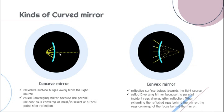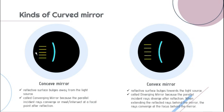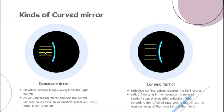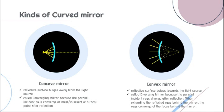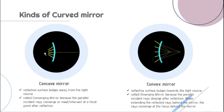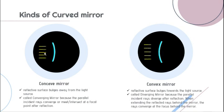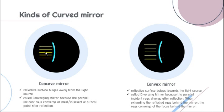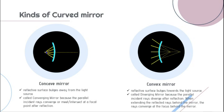In the concave mirror, the reflective surface bulges away from the light source. As the light strikes the concave mirror, the rays seem to intersect at a common point — that is why it is called a converging mirror. The parallel incident rays converge or meet at a focal point after reflection. Those reflected rays move toward each other at a common point of intersection.